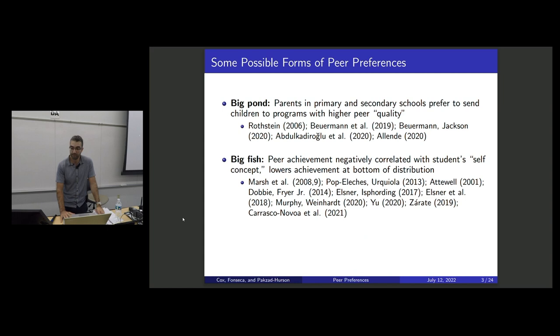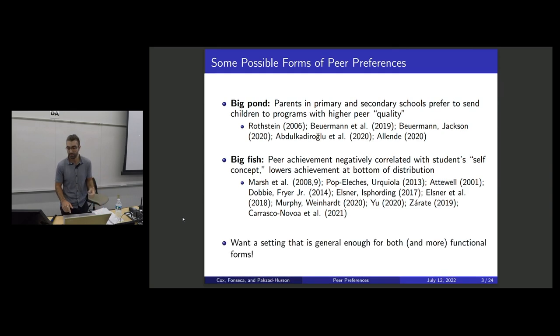There are a number of papers that look at big pond preferences. I want my child or the student themselves wants to go to a place where the students are just better, higher in ability, whatever ability or quality means. Another strand of the literature looks at this big fish effect where maybe I'm okay with peers being better, but I don't want them to overmatch me. You can imagine any number of other functional forms, and we want a setting that's general enough for all of these.